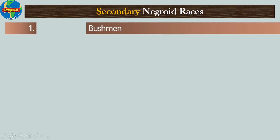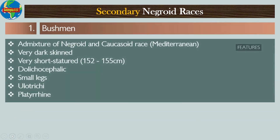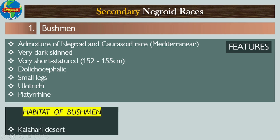Secondary Negroid races — Number one: Bushmen. The features of bushmen include: they are an admixture of Negros and Mediterranean race; they are very dark-skinned; they are very short-statured; they are dolichocephalic; they have small legs; they have ulotrichous hair; and they are platyrrhine. The habitat of bushmen includes the Kalahari Desert of Africa.